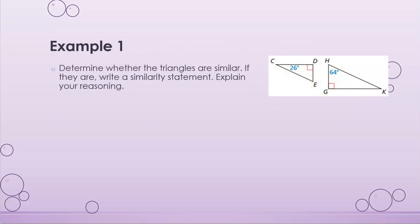My first example asks me to determine whether the triangles are similar and, if they are, write a similarity statement and explain my reasoning. I have one angle labeled on each triangle. On the first one I have angle C labeled, and the red square means it's a right angle, so I technically have two angles on each triangle.